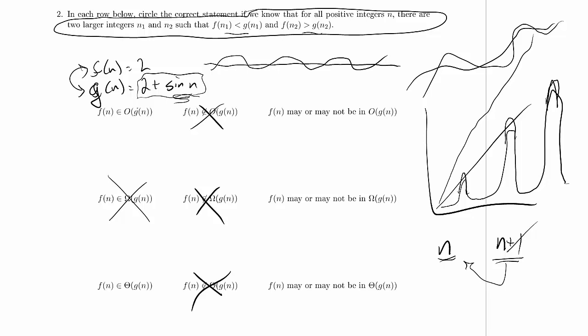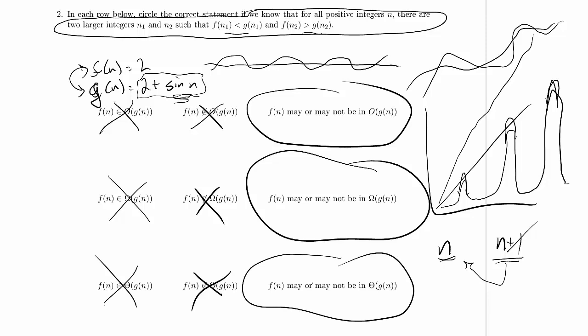All right, so we can give the reverse example to the one where we just gave. We can have f play the role of the oscillating function and g play the role of the line instead, and we'll be able to cross out this example, too. We'll have something that's not a big O bound, something that's not a big omega bound. So we don't know if it's in big O, we don't know if it's in big omega. Because we can eliminate these, we can also eliminate big theta, we don't know if it's in big theta.